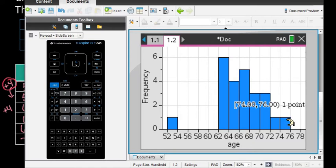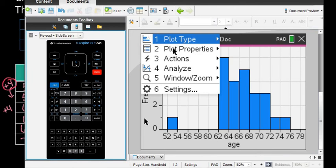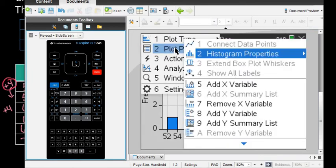I want to change it to fit my data. We used a class width of four, so go to menu, plot properties, and histogram properties.